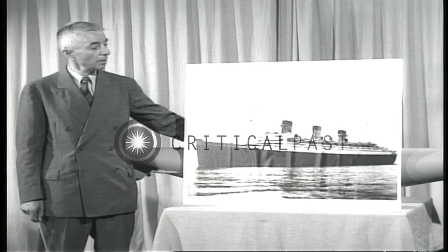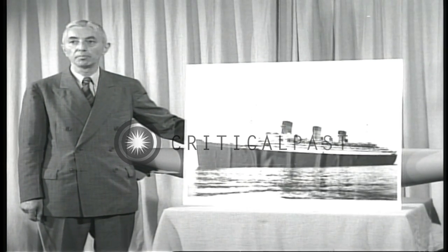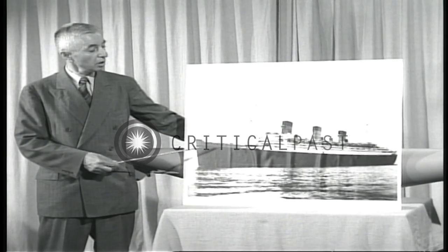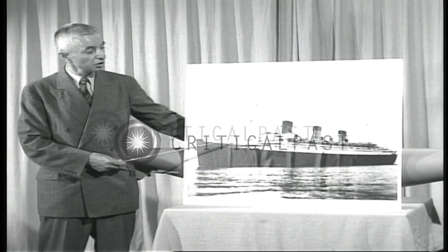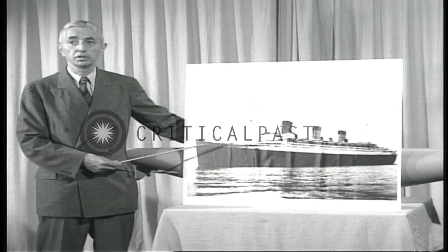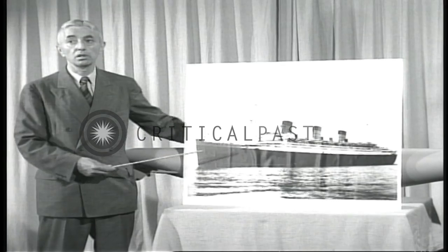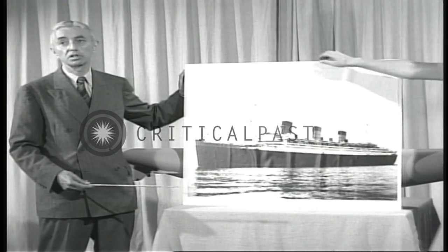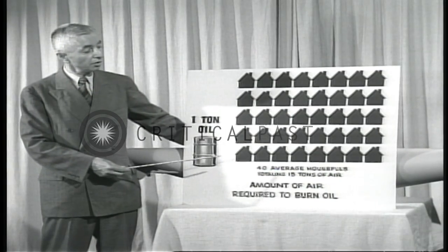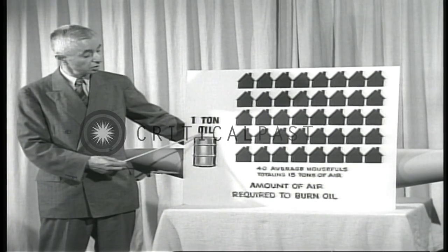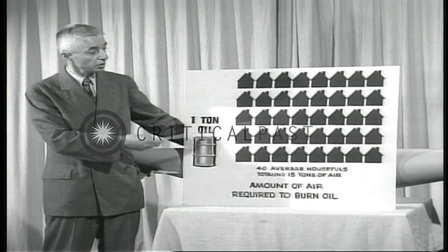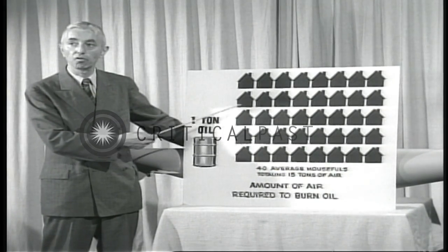When we use atomic power on a ship, we do not need air because no oxygen is required for combustion. Take the Queen Mary, for example. She burns about one ton of oil every two minutes. To burn one ton of oil, she requires 15 tons by weight of air. Here's how much air you need to burn one ton of oil — this drum represents one ton of oil, and here are 40 ordinary houses, representing the amount of air contained in 40 ordinary houses.